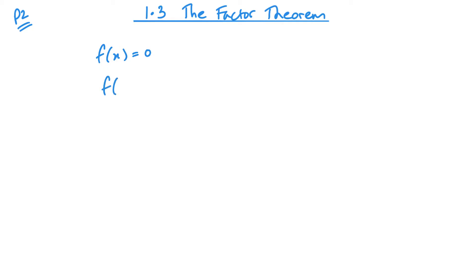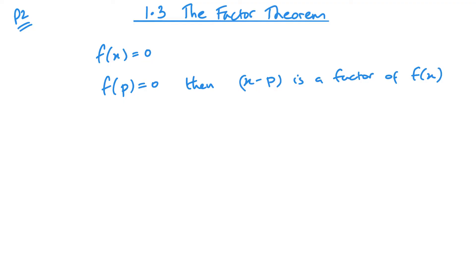So if we substitute a value p and it equals 0, then that means that x minus p is a factor of my f(x). And I can say the reverse: if x minus p is a factor, then f(p) equals 0.